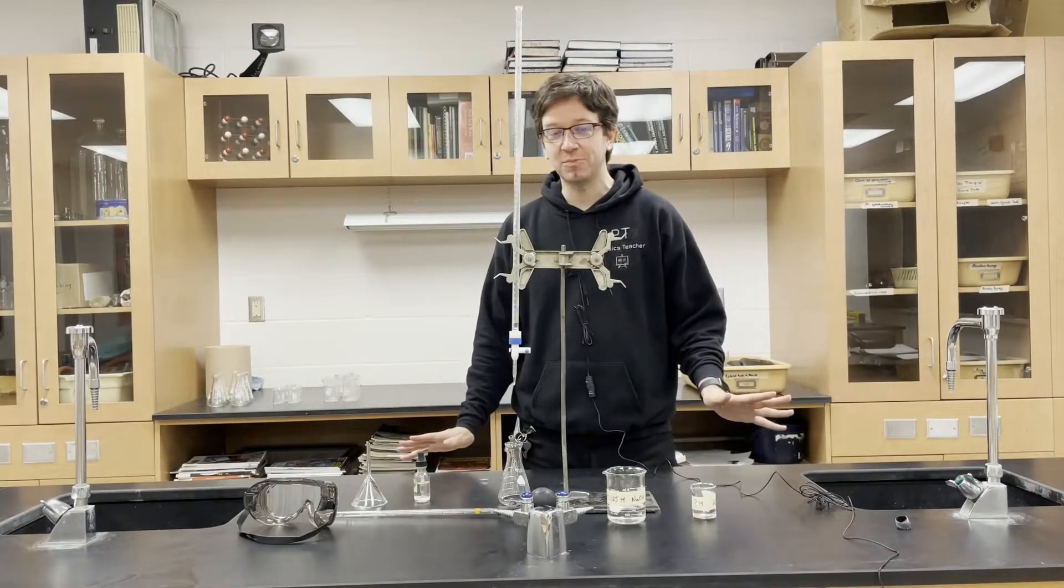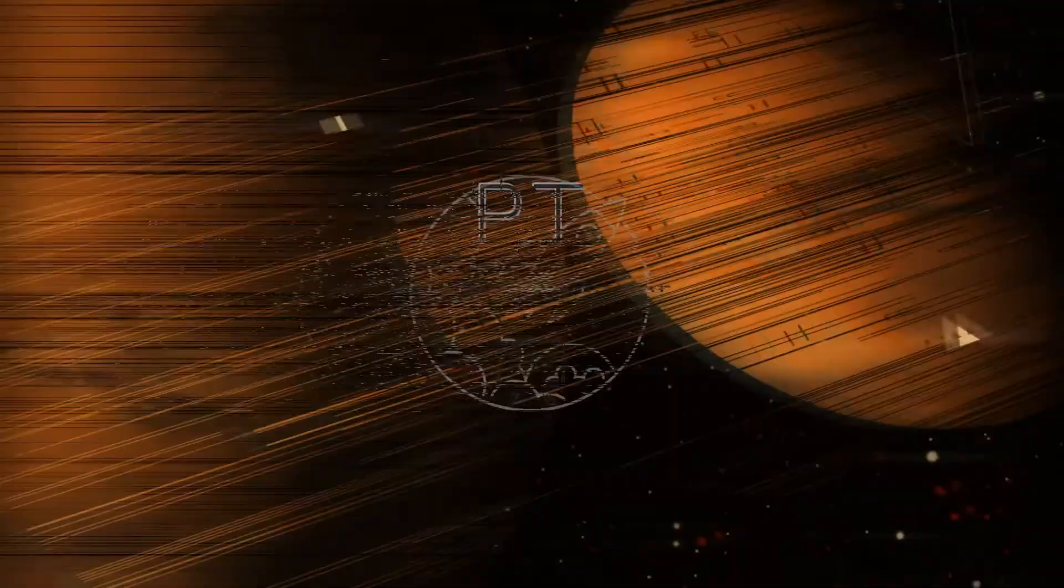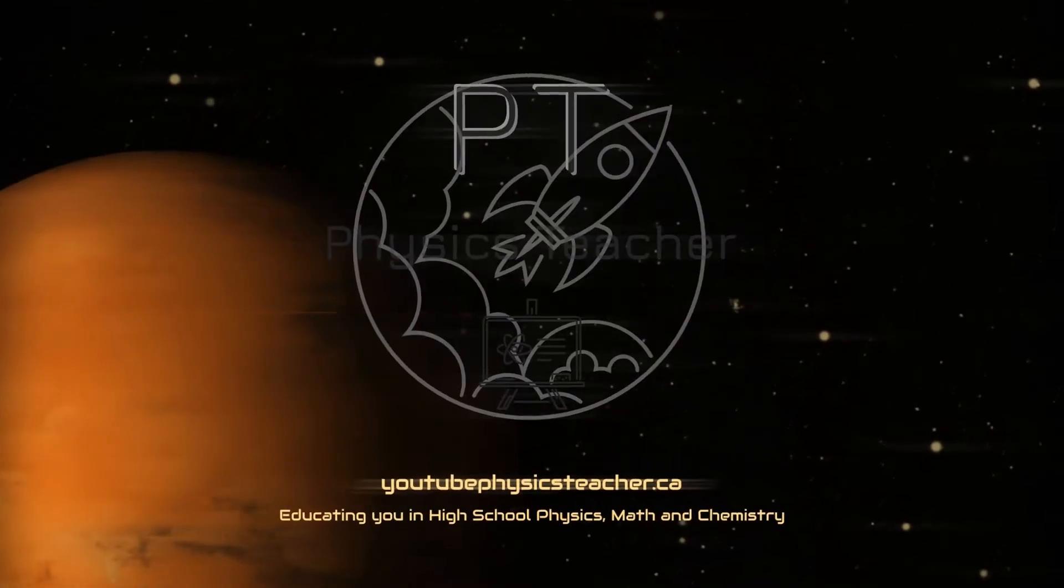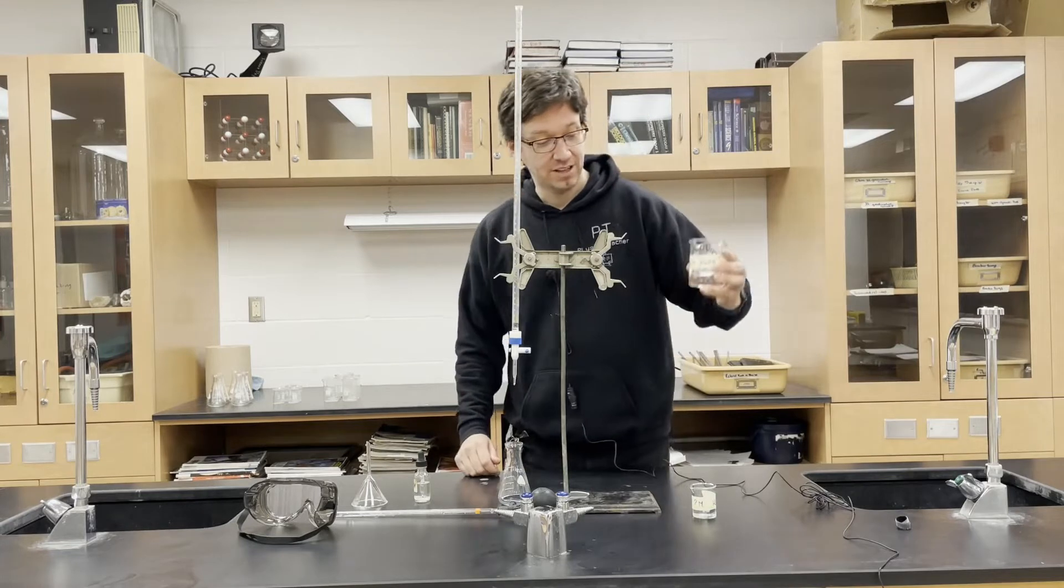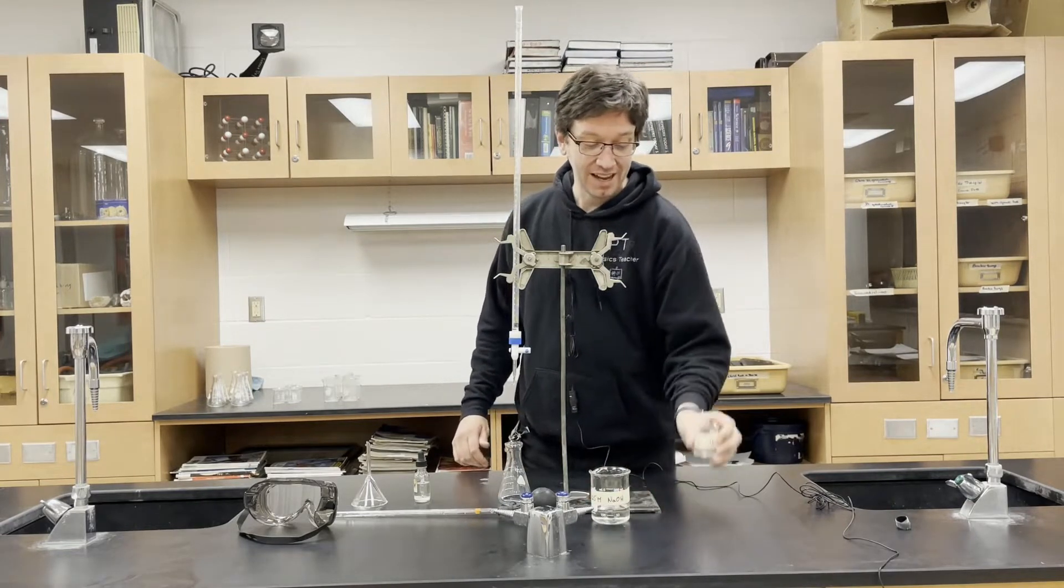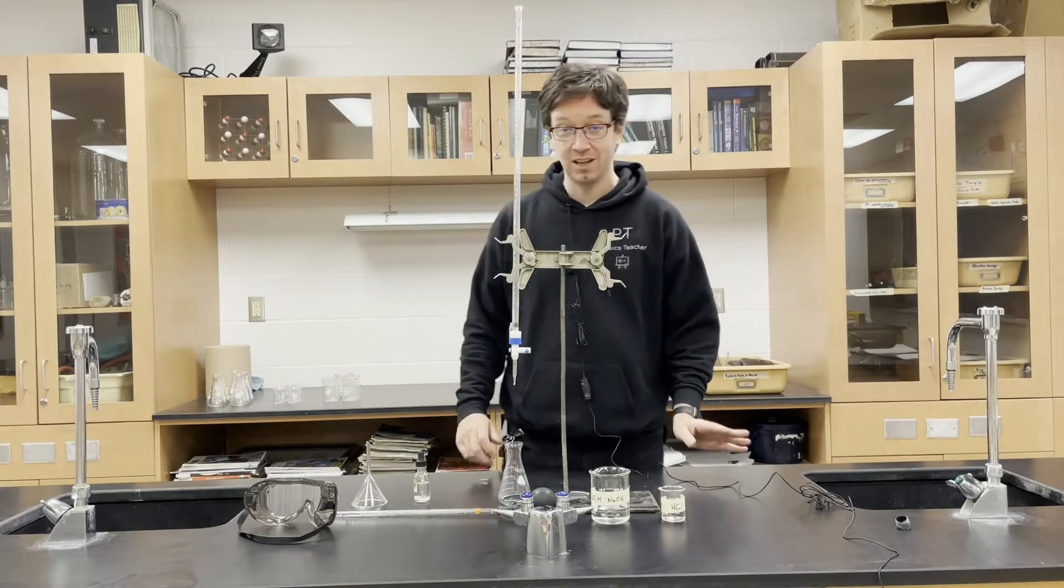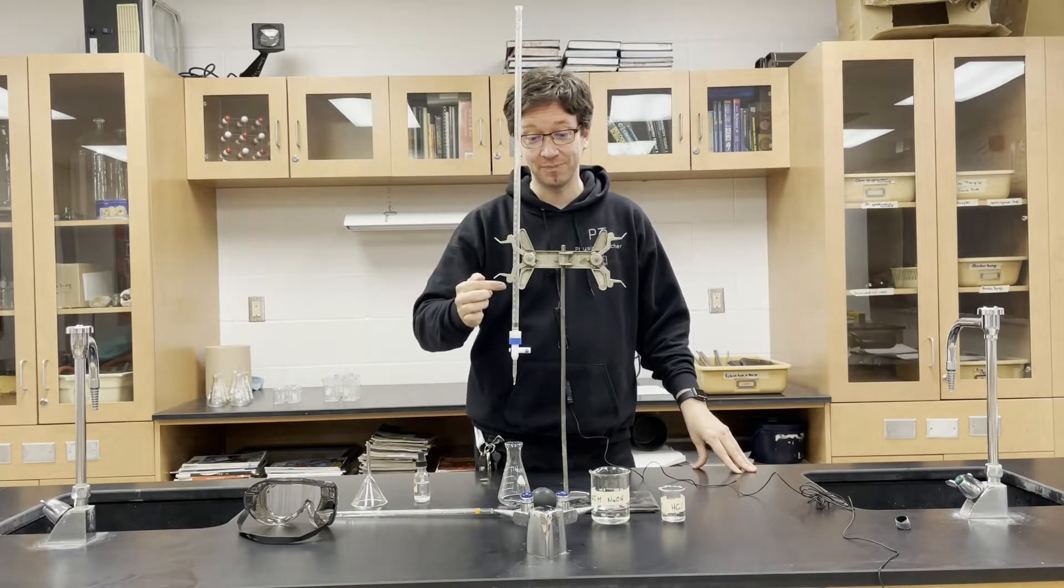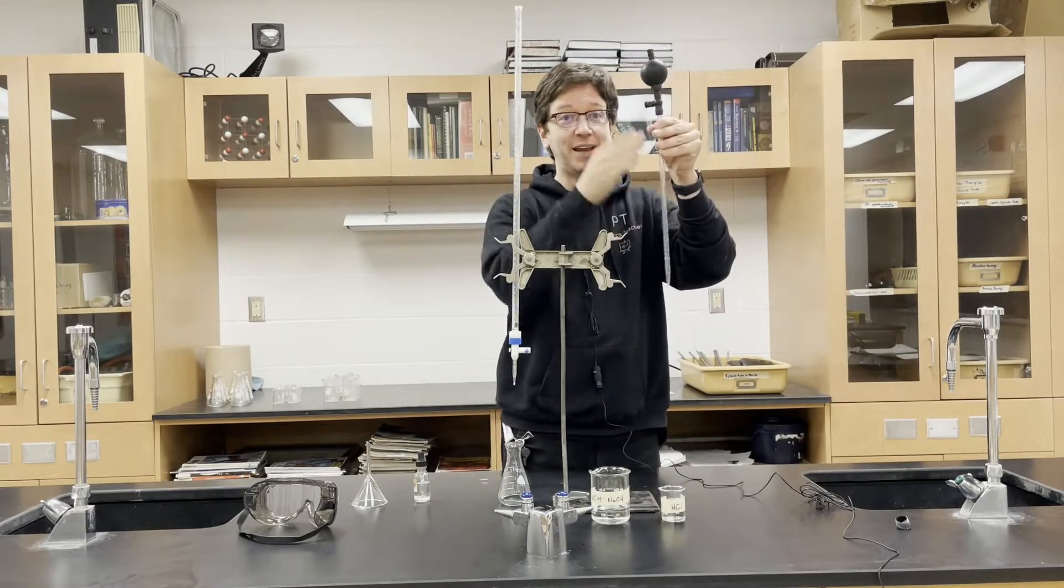In this chemistry experiment I'm going to show you how to do a titration. Here I have 0.125 molar sodium hydroxide and here I have hydrochloric acid with an unknown molarity. Some of the new equipment we're using is this burette, this burette clamp, and here we have a pipette and bulb.